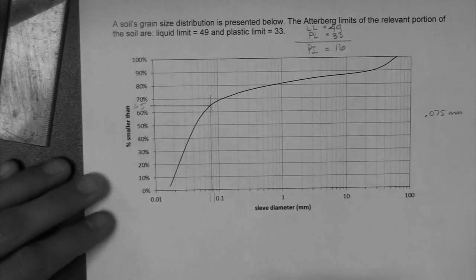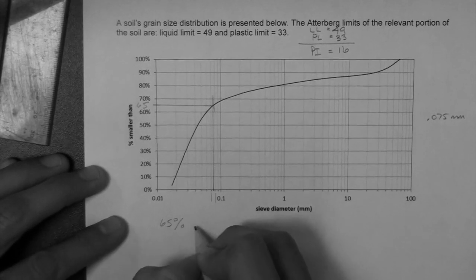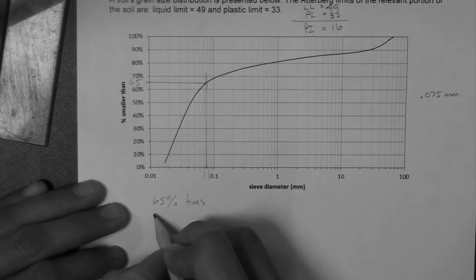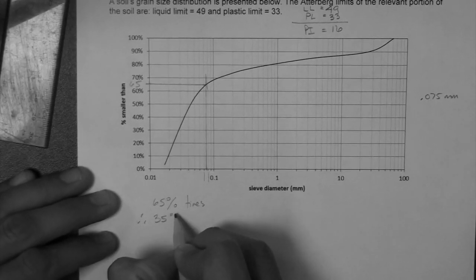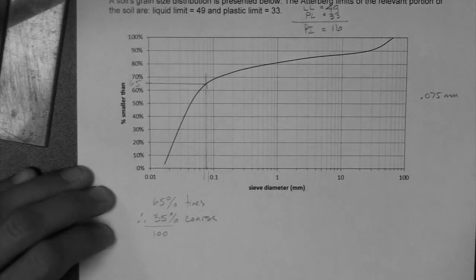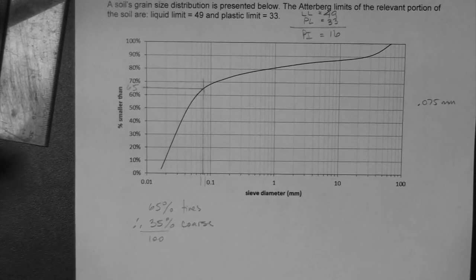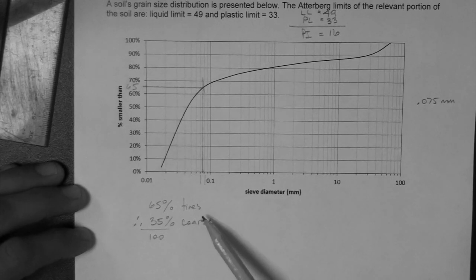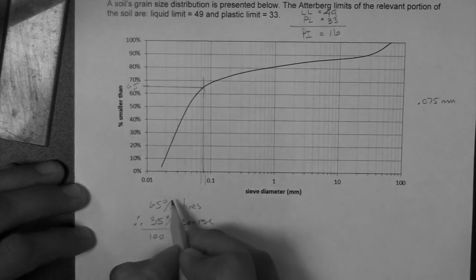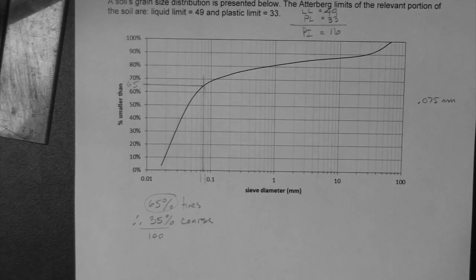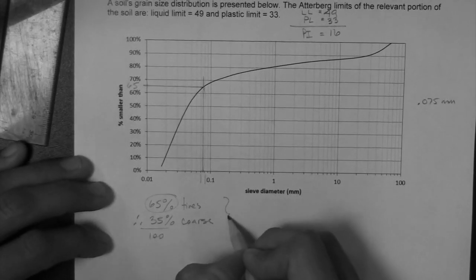65%. So, our soil is 65% fines. And that means that 35%, so therefore, 35%, this makes 100 obviously, is coarse. So, we have more fines than coarse. The fines content is more than 50%. 65%. It is more than 50%, therefore, our soil is fine.